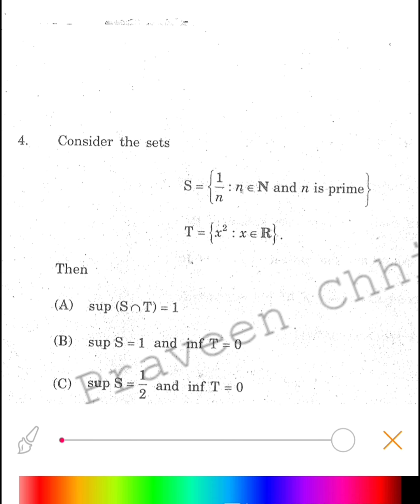So our S will be equals to 1 by 2—we can't take 1 as 1 is not prime—1 by 3, 1 by 5, 1 by 7, and so on.